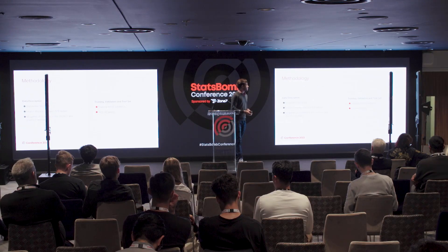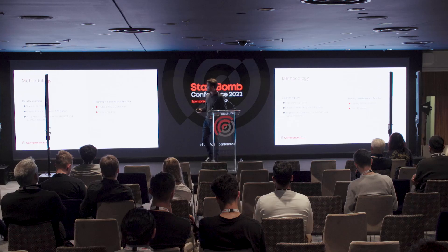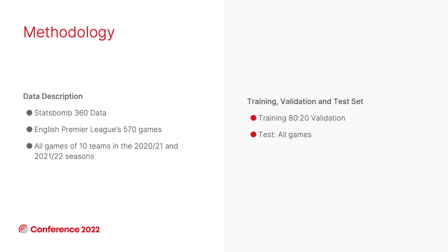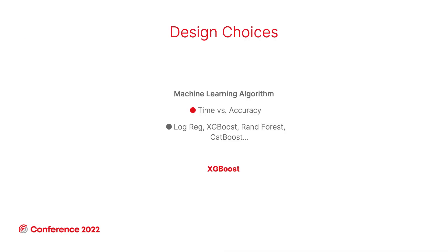A bit more about data: we have English Premier League data for the last couple of seasons, split into 80% training and 20% validation, and we used cup games for the test set to provide more insights. For the model, the first design choice is the machine learning algorithm. There's a trade-off between speed and accuracy, and we chose XGBoost — though Random Forest or CatBoost could also be used.